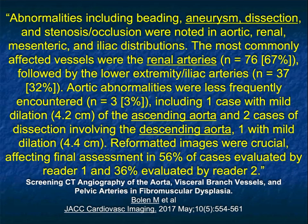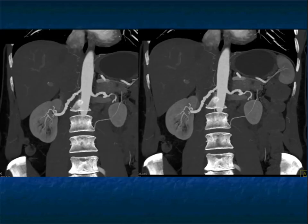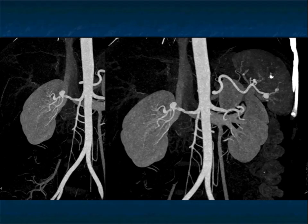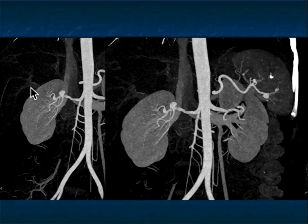In the renal arteries, we always look for beading — that's the classic finding — but you can also see stenosis and aneurysm formation. That beading appearance shows particularly well on MIP imaging and is easy to miss on axial. Here's a great example of FMD involving both renal arteries, especially the right with beading nicely seen. Here's FMD with involvement of the splenic and renal arteries — a small splenic artery aneurysm, and tracking downward, an aneurysm in the right renal artery and actually a second right renal artery aneurysm as well.